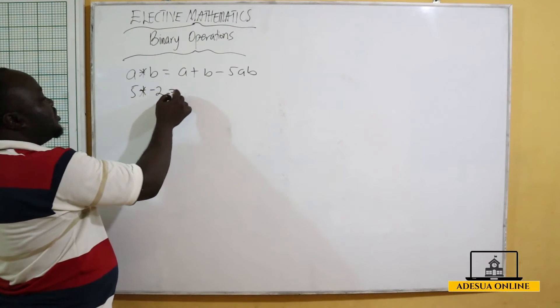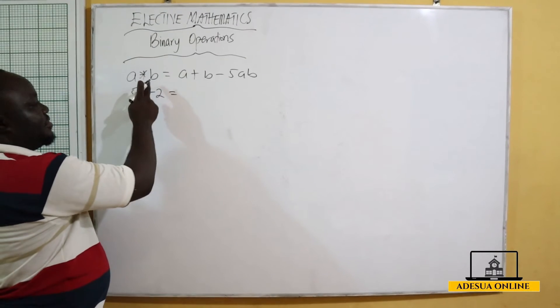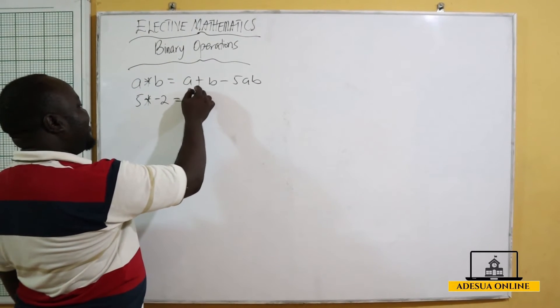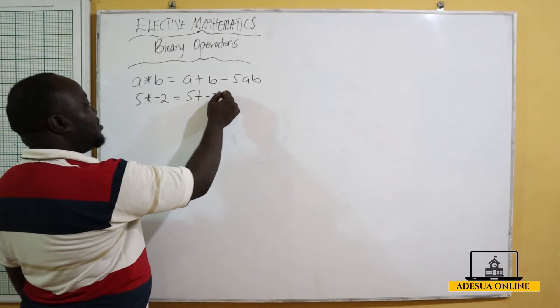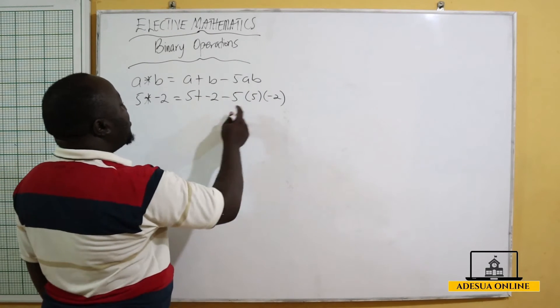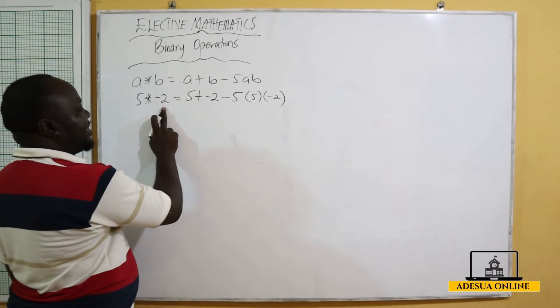This means my a is 5, my b is negative 2. So this will give us 5 plus negative 2 minus 5 times 5 into negative 2. So my a is 5, my b is negative 2.